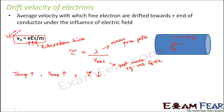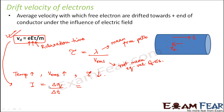As we saw, drift velocity's expression in terms of relaxation time is eEτ/m. Now, if you want to establish a relationship between drift velocity and current: current is nothing but charge per unit time, so the average current would be ΔQ/Δt. Now, ΔQ can be written as NE, where N is the number of charge carriers and E is the charge on an electron.